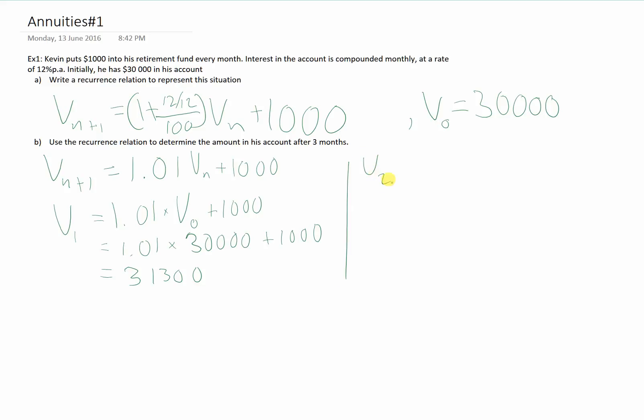Next, V2. Well, that's 1.01 times V1 plus 1,000. So we're just using the previous term to find the next one. That's 1.01 times 31,300 plus 1,000.